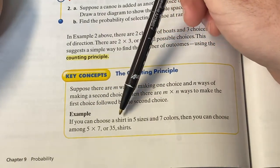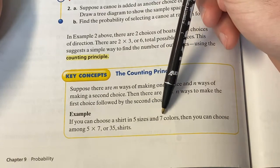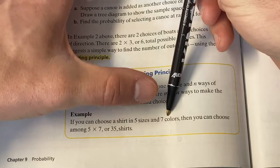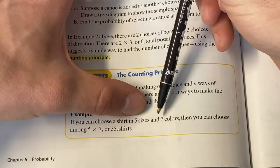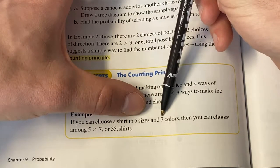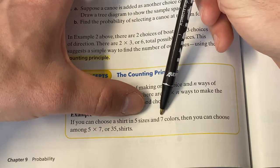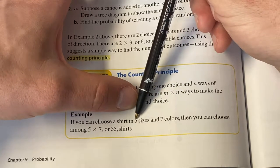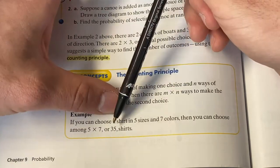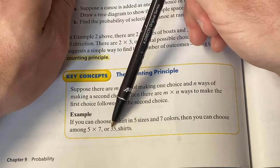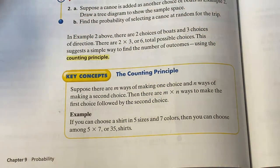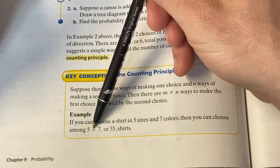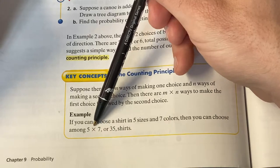The example here says, if you can choose a shirt in five sizes and seven colors, then how many shirts are there going to be? Well, there's two choices you could make here, a size and a color. How many options are there for each choice? Five and seven. So the way you answer this is you multiply five times seven. Five sizes, seven colors. That's going to be a total of 35 different shirts. And that's the counting principle.